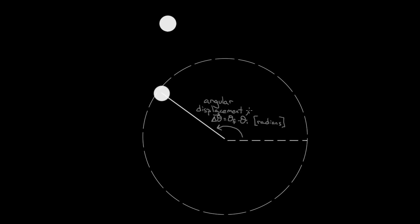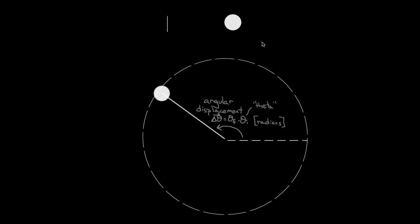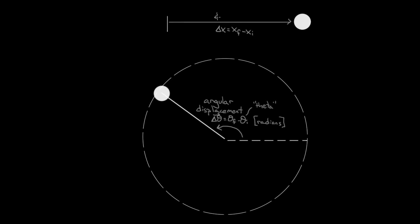The name for this symbol is theta, and we should mention that this is analogous to how we defined the regular displacement. So if you imagine a tennis ball just going in a straight line, the regular displacement was defined to be the final position minus the initial position, which we called delta x — that's just usually called the displacement, which is measured in meters.